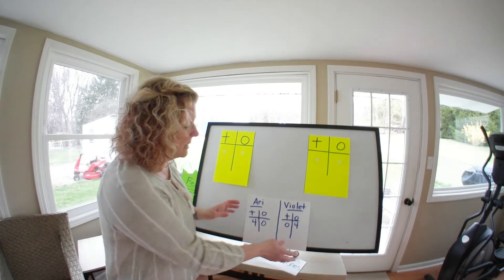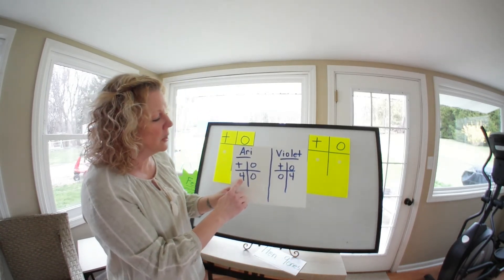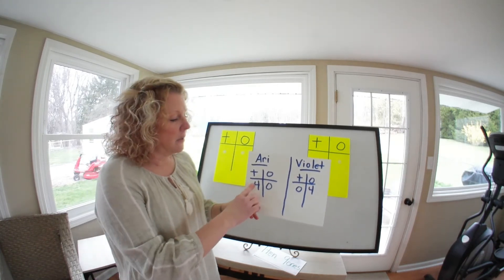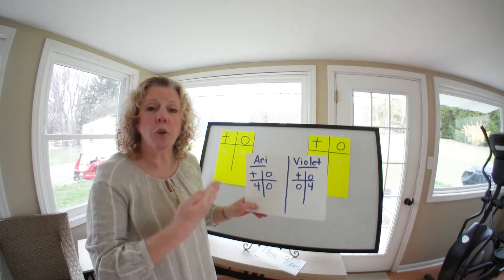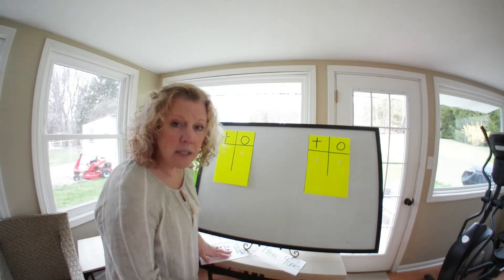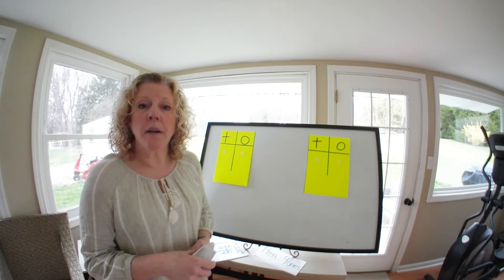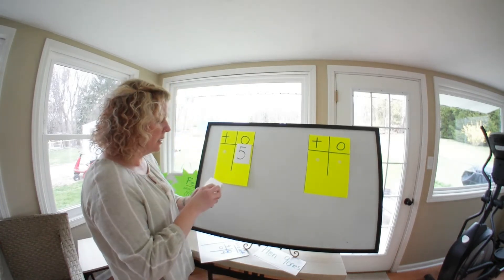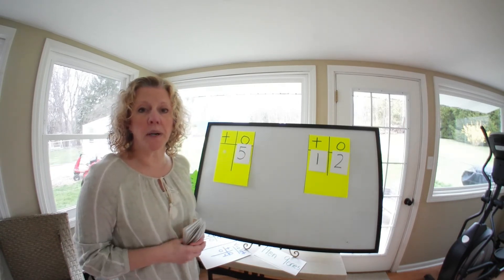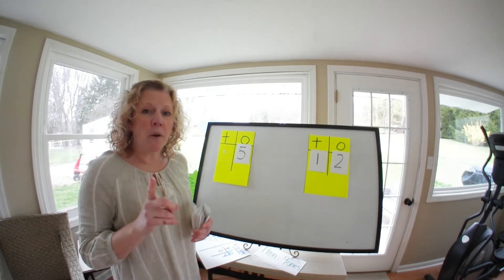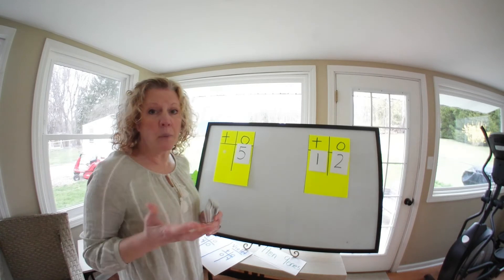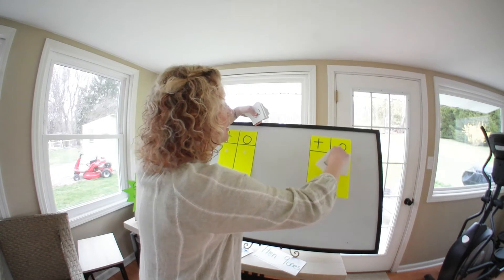The way I can prove that is by looking at our tens. There are four tens for Ari and zero tens for Violet, so I know Ari's is the bigger number. Now, what happens if the tens are the same? Then you're going to go to the next digit, which is your ones, and that will tell you which one is greater and which is fewer. Let's start practicing. I have the number five and I have the number twelve. What is the greater number? That's right, twelve is the greater number. There are no tens in five, so we imagine that's a zero, and there's a one in twelve's tens place — one is bigger than zero, so twelve is our bigger number.